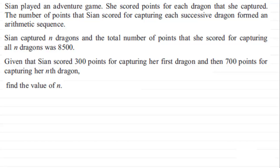Okay, welcome back if you had a go. So let's just have a quick recap of this. We've got that Sian played an adventure game. She scored points for each dragon that she captured, and the number of points that Sian scored for capturing each successive dragon formed an arithmetic sequence. Sian captured n dragons and the total number of points that she scored for capturing all n dragons was 8,500. Given that Sian scored 300 points for capturing her first dragon and then 700 points for capturing her nth dragon, we've got to find the value of n.